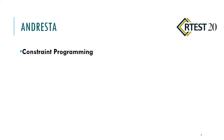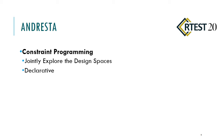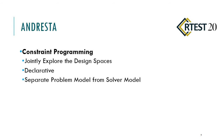By using constraint programming, we are able to jointly explore different design spaces such as partitioning, scheduling, and routing without needing to partition the main problem into sub-problems. Also, constraint programming is declarative, so we can add several objectives to the existing model without making any changes — whereas if you had developed a C algorithm, you would have to make very big changes to add another objective. Additionally, constraint programming separates the problem model from the solver model, so you can solve your problem model with different solvers, or write your own specific solver.